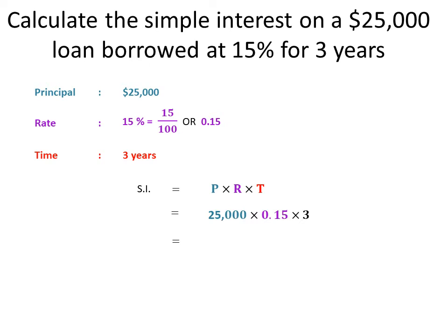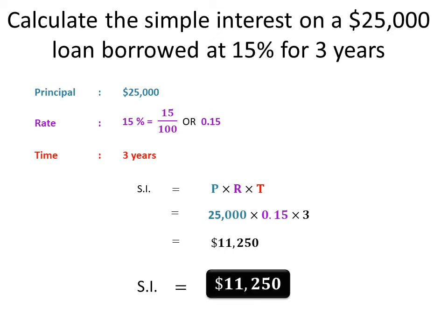We substitute our values: wherever you see P, replace it with 25,000, and so on. Multiply them out and you get 11,250. So when this person borrows $25,000 for three years at 15 percent, they end up paying $11,250 in interest alone — that's not even the money they borrowed, just the interest. Imagine paying the interest plus the amount you borrowed!